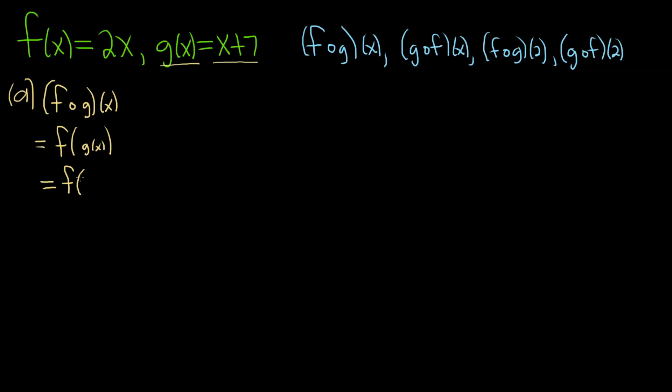So you write down the f again, you write down the parentheses, and then you just replace g of x with x plus 7. That's the first step. And it's pretty easy to memorize what it means, because look, it's f, g, f, g. It's in the same order.